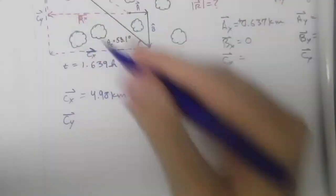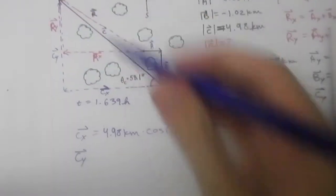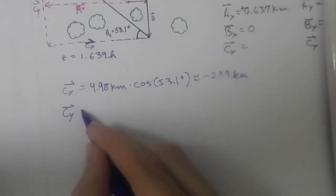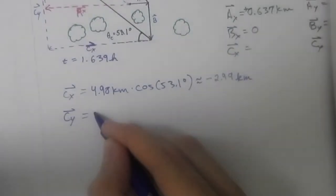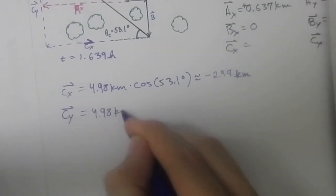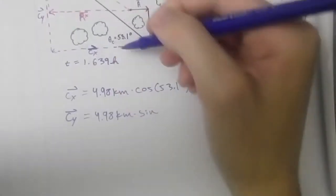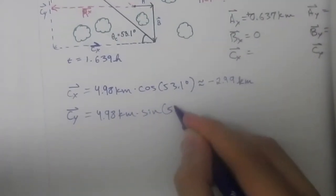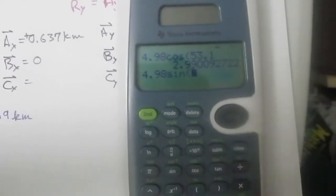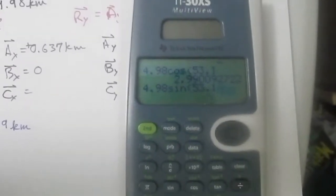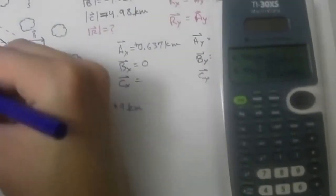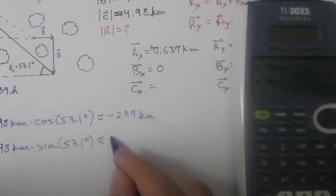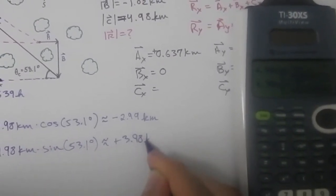Likewise, solving for the y component of vector c: it equals the hypotenuse times the sine function, since we're dealing with the side opposite to this angle. So cy equals 4.98 times sine of 53.1 degrees, which is approximately positive 3.98 kilometers.